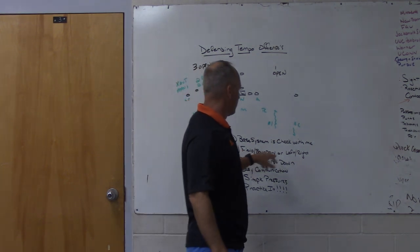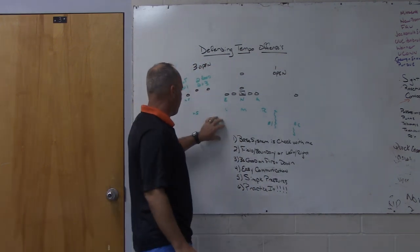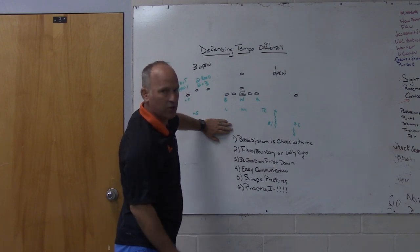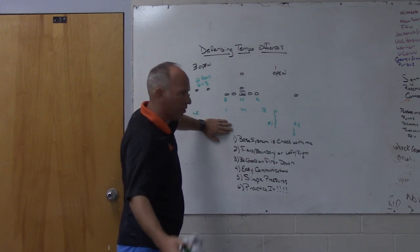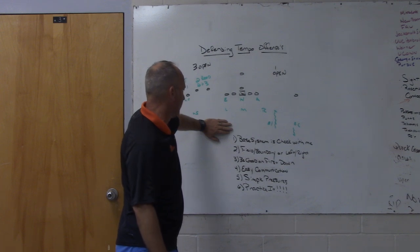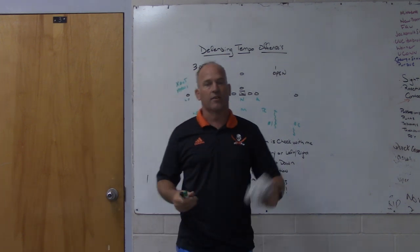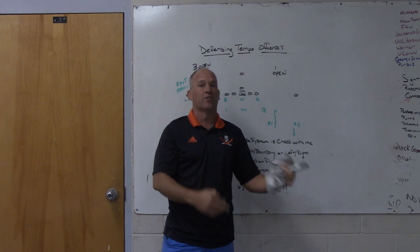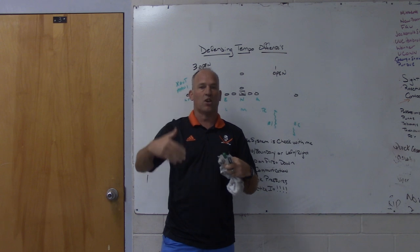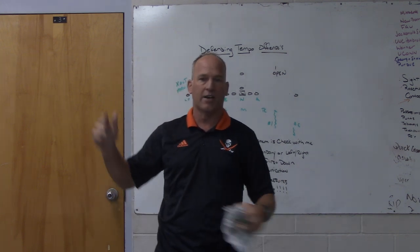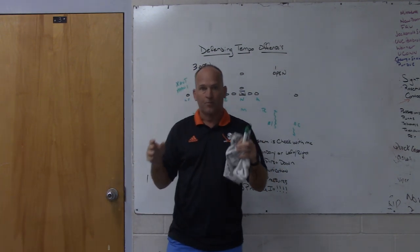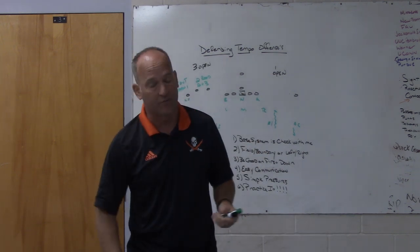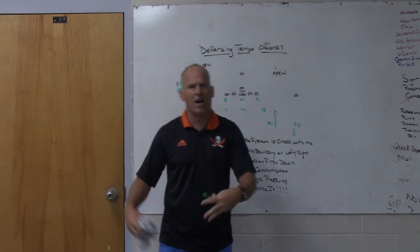The second thing I would look at is playing some type of field-boundary or left-right defense. We play a left-right defense. Our guys — other than our free safety, who is the only guy that travels — our other ten players on the field will be left and right players predominantly, with the exception of some game-plan stuff. When we go into camp, we play a left-and-right defense, so except for the free safety, the other ten guys never move. For us, I feel like that's an added bonus when defending a tempo offense, because the way we teach our kids to play defense lends itself right into a tempo offense — we're not chasing the formation all over the place.